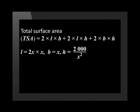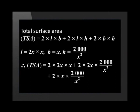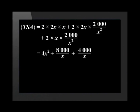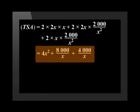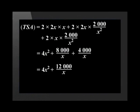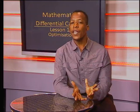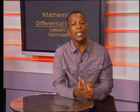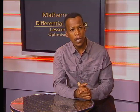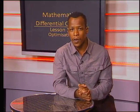We now substitute the length, breadth, and height so that the total surface area equals 2 times 2x times x, plus 2 times 2x times 2,000 divided by x squared, plus 2 times x times 2,000 divided by x squared. This simplifies to 4x squared plus 8,000 divided by x plus 4,000 divided by x. Adding the two like terms gives the total surface area equal to 4x squared plus 12,000 divided by x. We can use this to calculate the surface area of the prism if we are given a value for x, but in this question we weren't given this value — we were asked to find the dimensions for which the surface area is at a maximum.